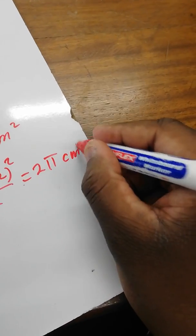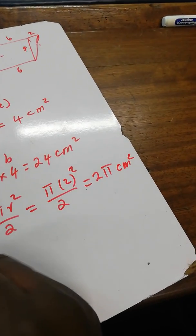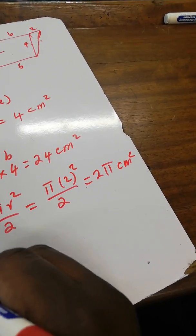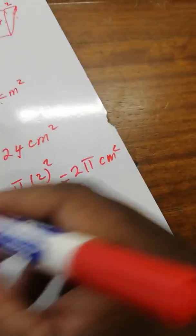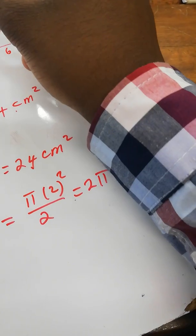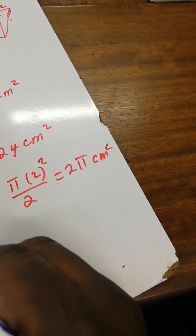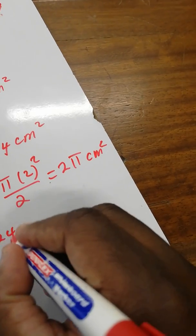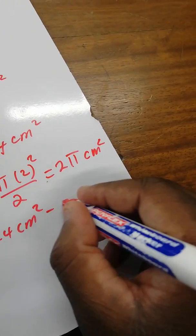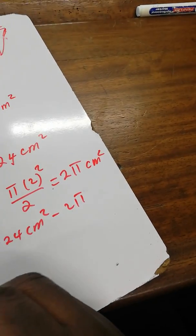Therefore, the last step is the total area. We add the triangle plus the rectangle, then subtract the semicircle. So it's four centimeters squared plus twenty-four centimeters squared minus two pi.